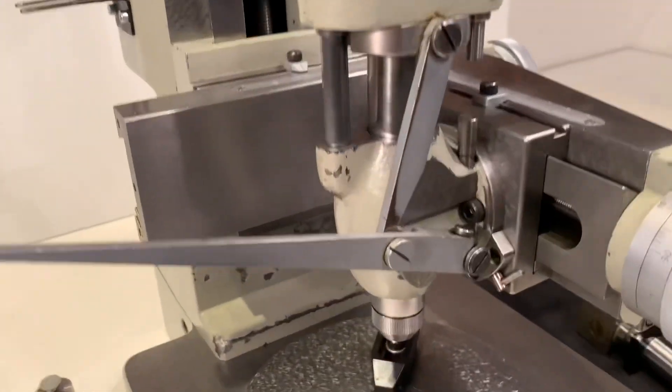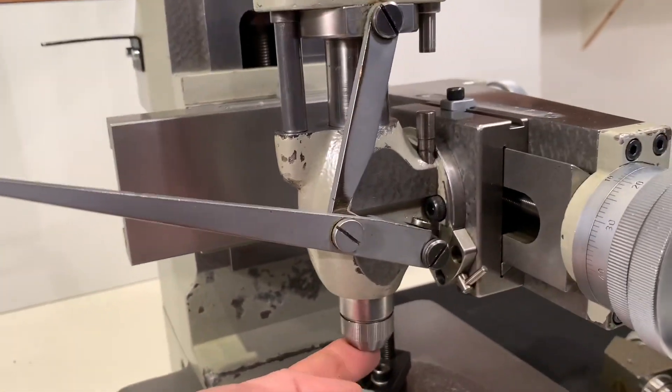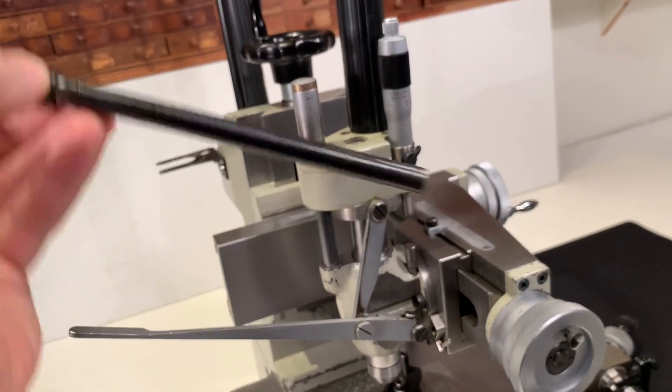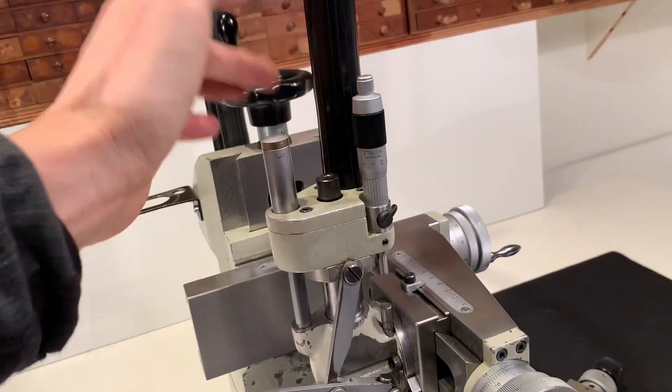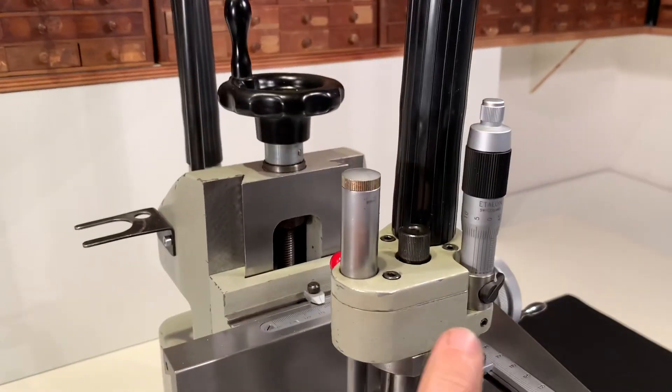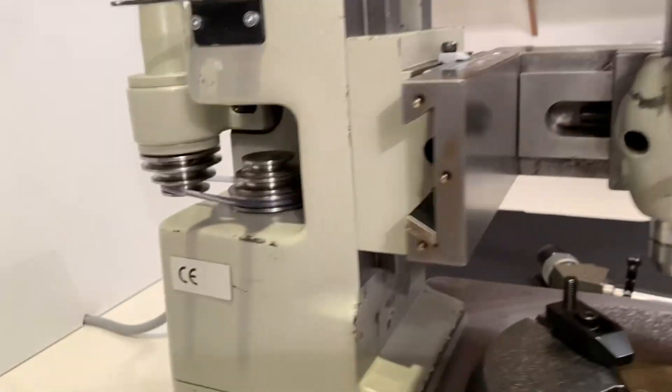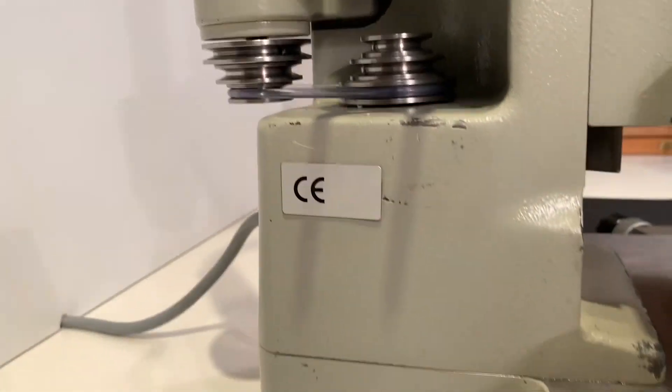Yeah this 8mm spindle here has a drawbar on this side, easily accessible. Goes to a flexible shaft. The motor is here on the back with 3 different speeds.